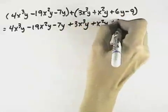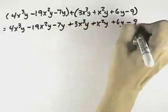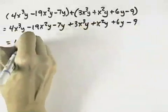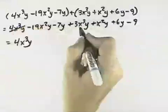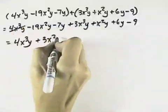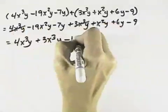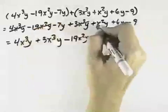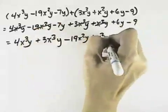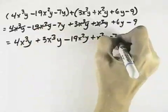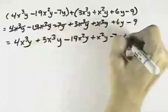And then in order to simplify this, what we want to look for is like terms. So we've got a 4x³y here, and then we have a 3x³y that's positive. Then we have a minus 19x²y and a plus x²y, so there's two like terms. Then a minus 7y and a plus 6y, and finally a minus 9.